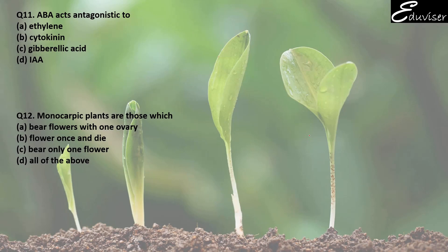Question number 11: ABA acts antagonist to — if it were auxin, the answer would be cytokinin. But here ABA is asked. ABA is the antagonist of gibberellic acid. So the answer for question 11 is C.